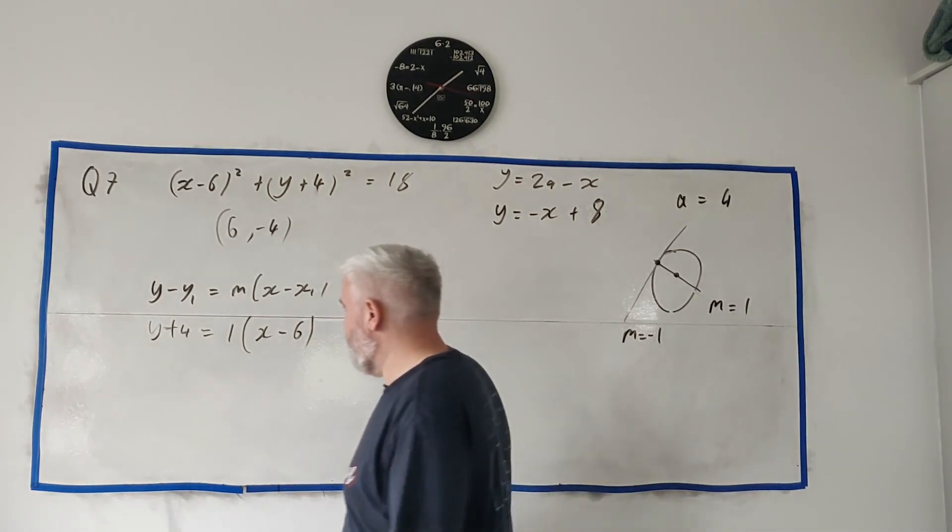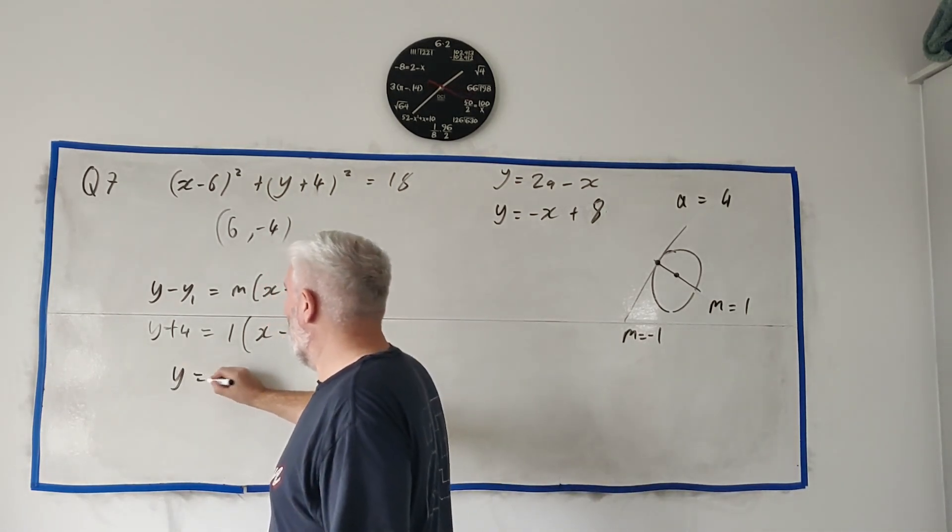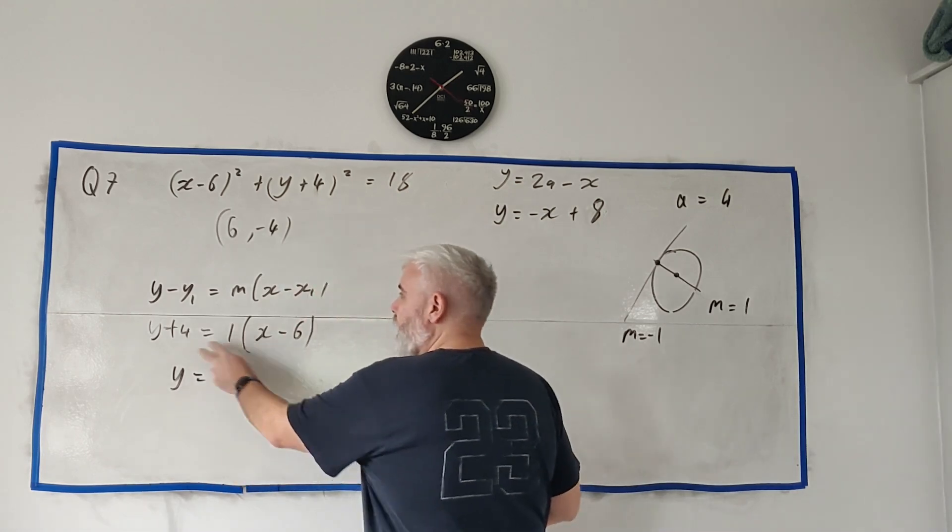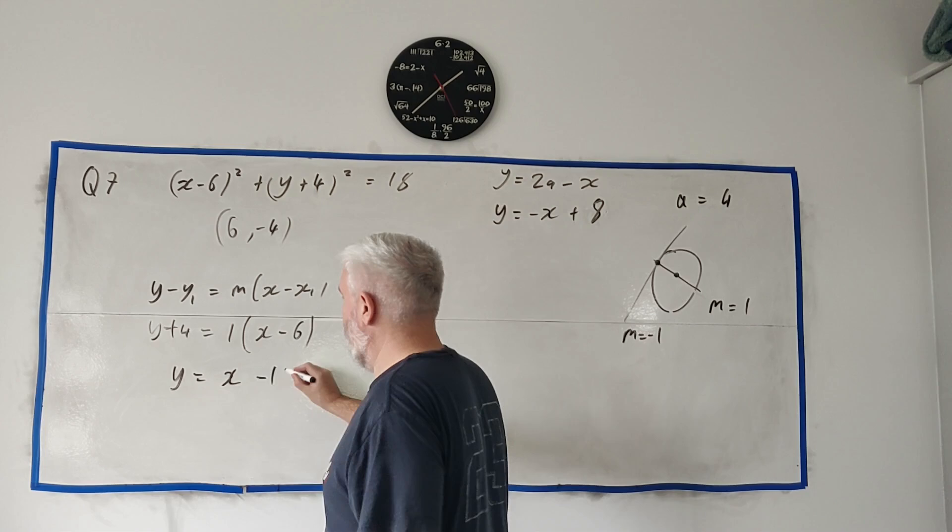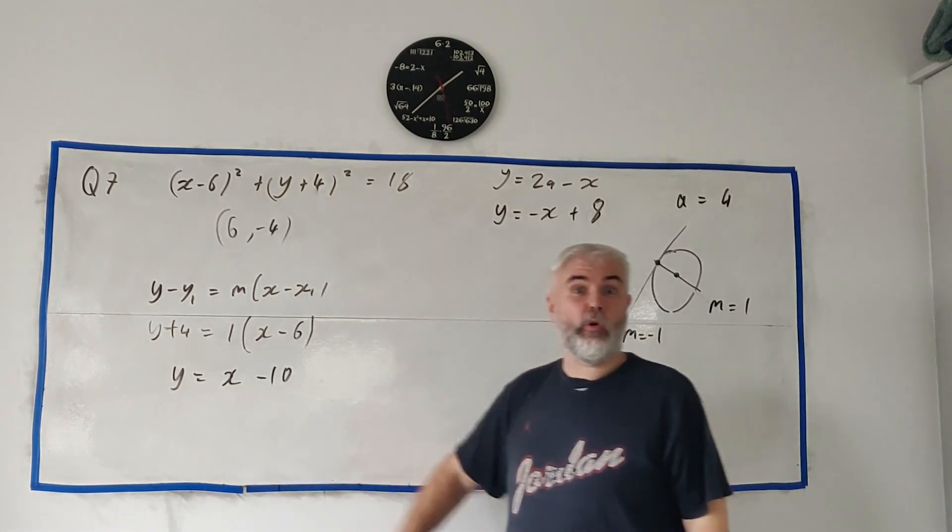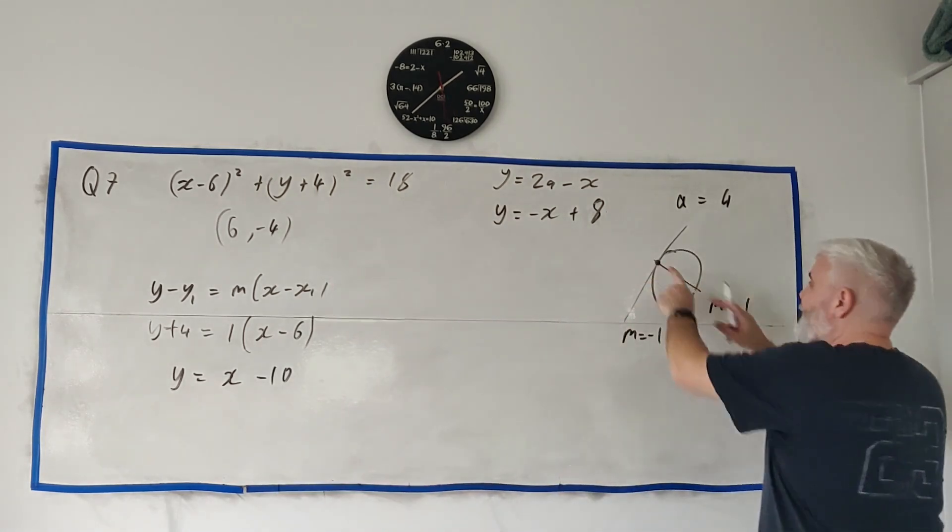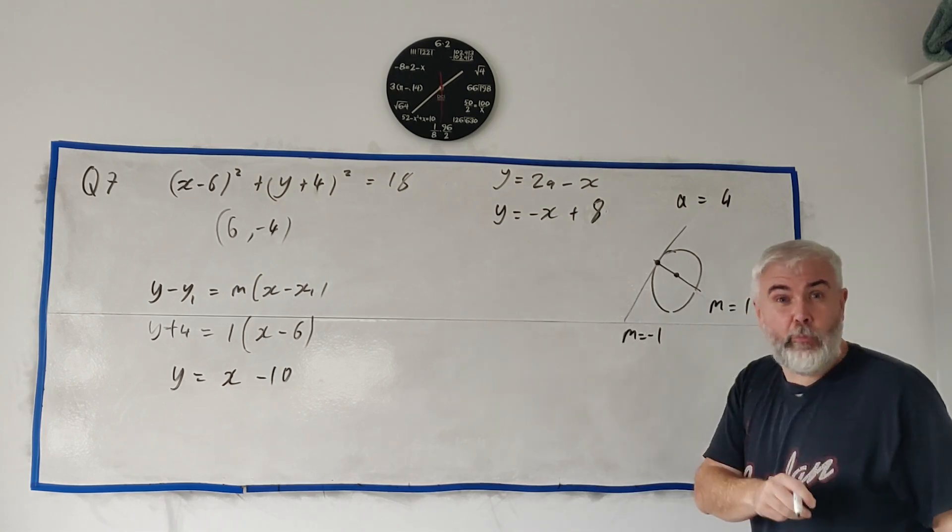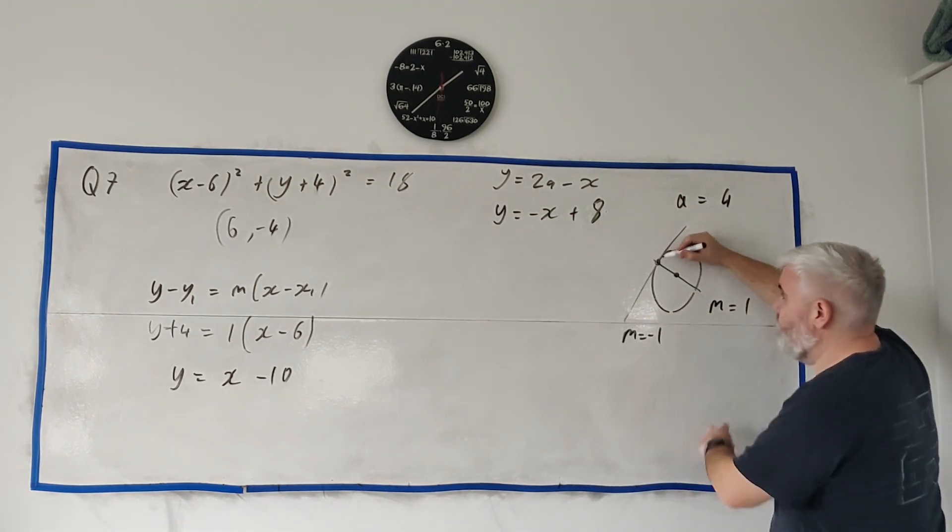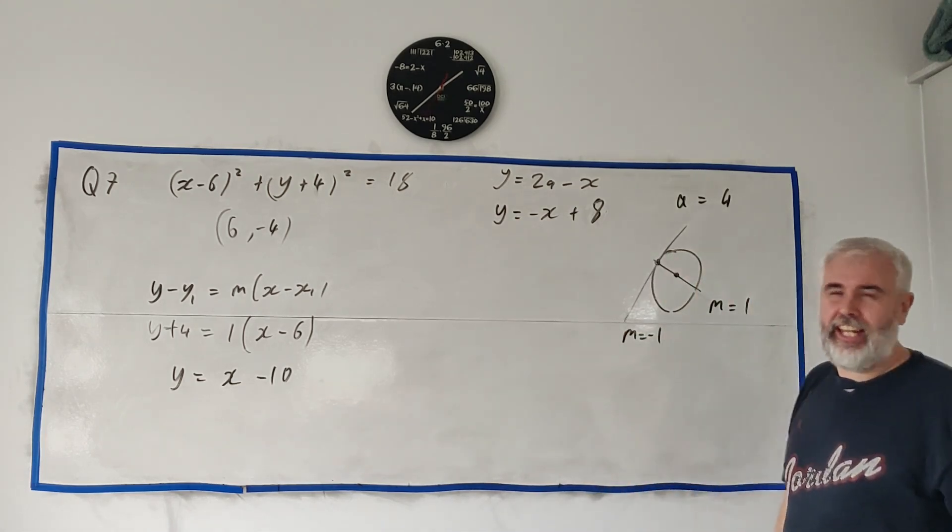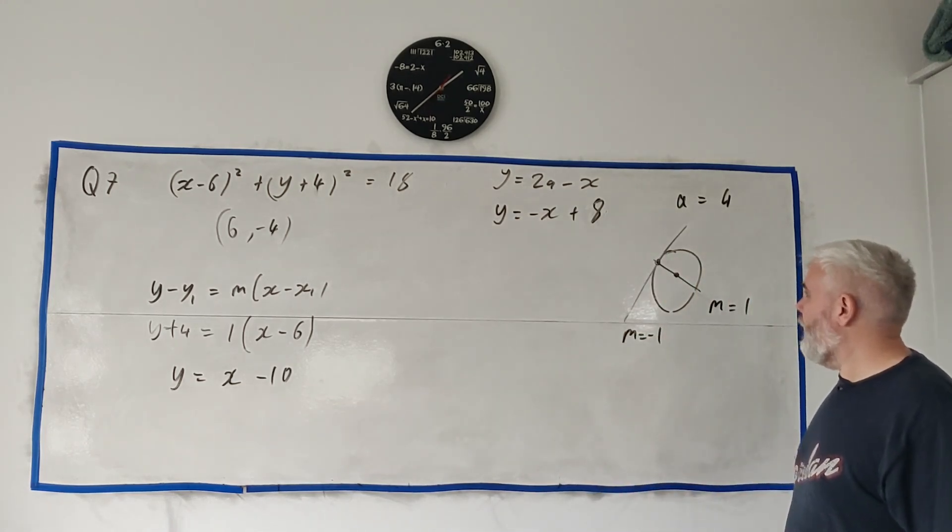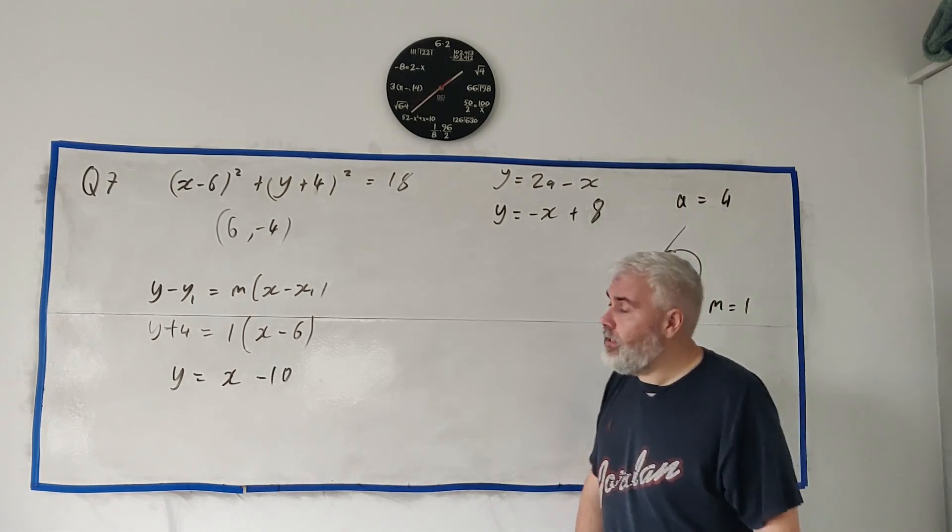That's Y minus minus 4, so that's plus 4, is equal to M, M is 1, times X minus 6. Clean all this up. Do they want it in any given format? No. Let's have the Y on its own. Y is equal to X, and we'll have minus 6 minus another 4 minus 10. That's the equation of this tangent here. You could have ended up doing more work if you went and found this point. It's okay, you're still hopefully got the right answer, you just did a little extra work you didn't have to. And yeah, that's it for question 7.